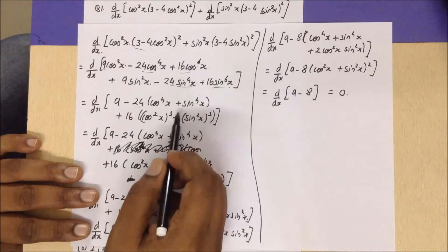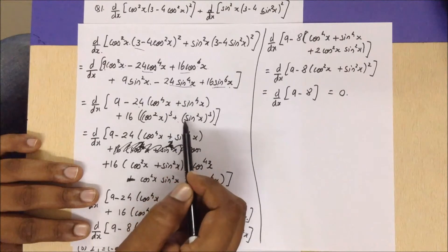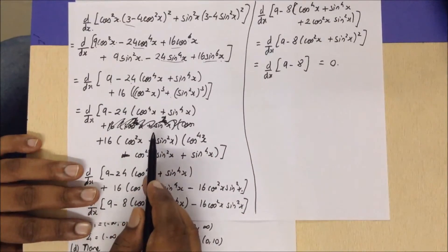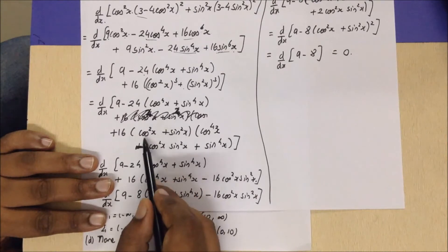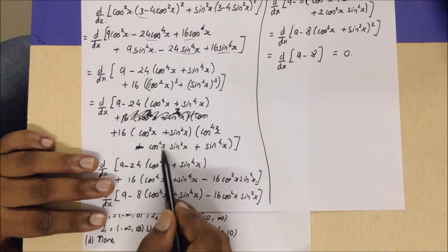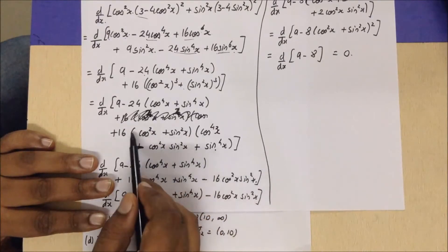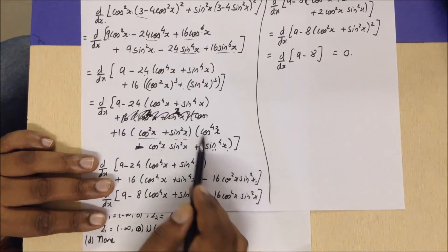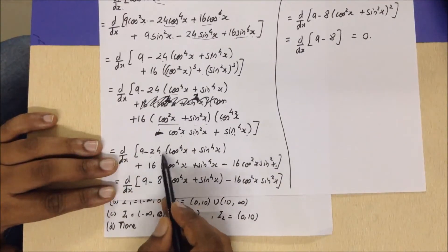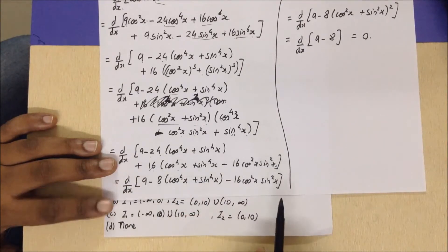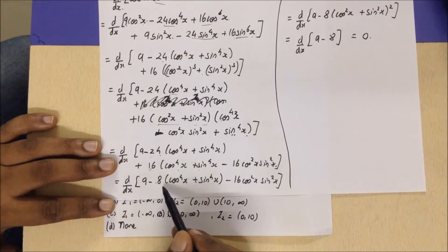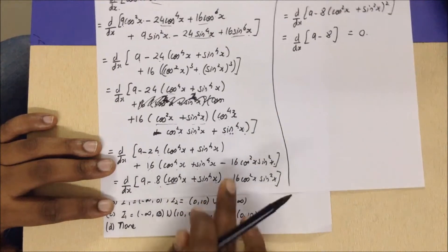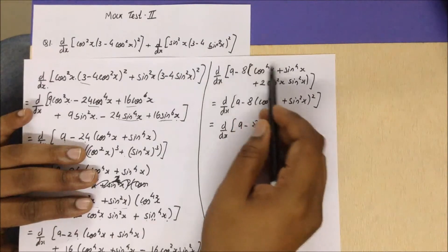We then take −24 and 16 common from the remaining terms, giving cos⁶x + sin⁶x. We simplify this as (cos²x)³ + (sin²x)³, applying the a³ + b³ = (a + b)(a² − ab + b²) formula. The (a + b) bracket becomes 1, leaving cos⁴x + sin⁴x. Combining, we get −24 + 16 brackets, resulting in 8(cos⁴x + sin⁴x). Taking −8 common gives 9 − 8(...).